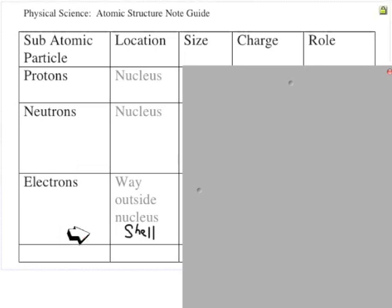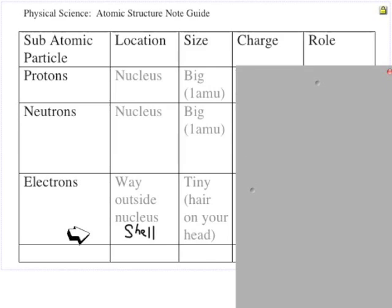We'll show a video or bring that to life later as far as scale, but it's a pretty impressive scale. Size: protons and neutrons are basically the same size—one amu means one atomic mass unit. Neutrons are basically one atomic mass unit as well.